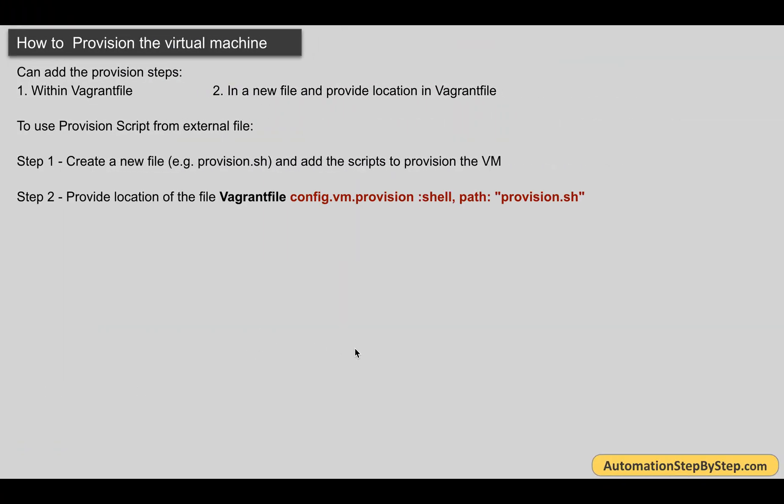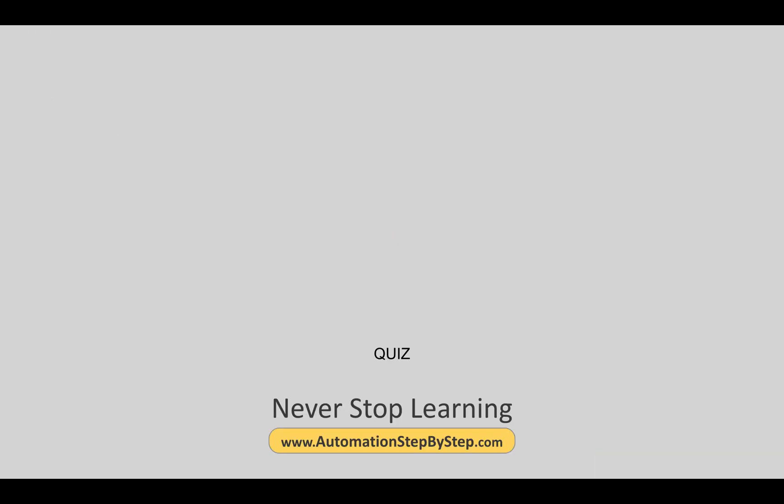We have done step two — provided the location in the Vagrantfile and then run 'vagrant provision'. I hope this was very useful for you. You can try some more hands-on practice and see more examples online. Let me know in the comment section. If you find a link for a quiz in the description of this video, you can take the quiz and let me know your score. Thank you for watching and never stop learning.